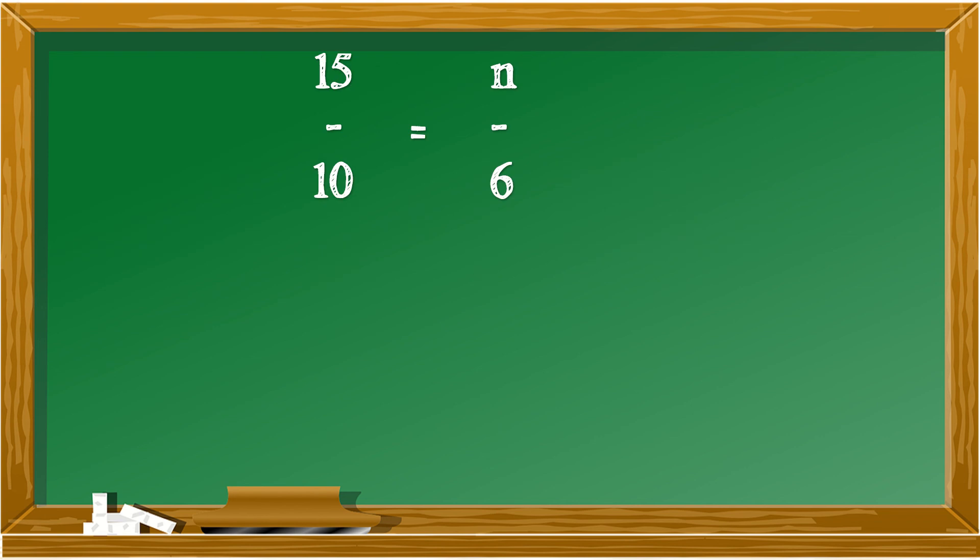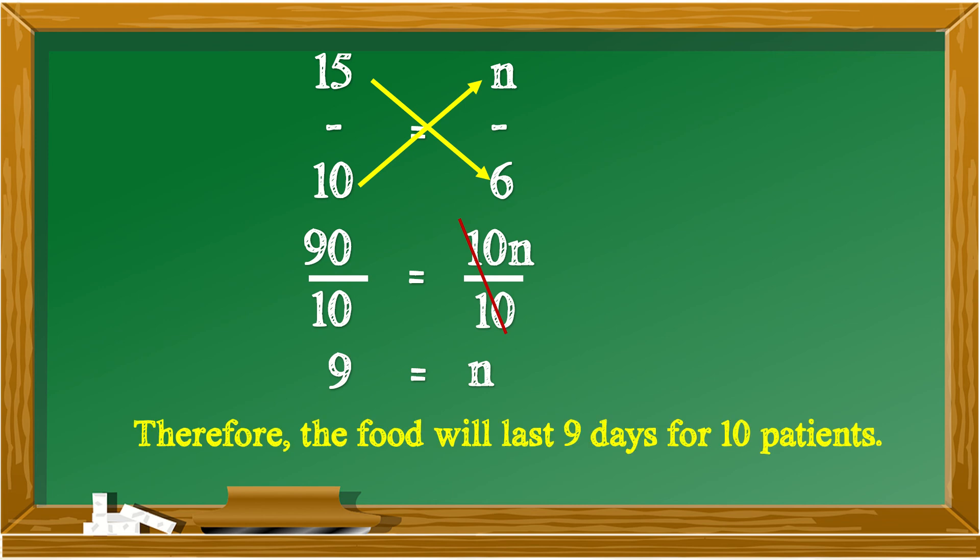Let us solve this proportion by doing cross multiplication. 15 times 6 is equal to 90. 10 times N is equal to 10N. Divide them both by 10, then cancel out those two 10 that will leave letter N alone. 90 divided by 10 is 9. So, meaning 9 is equal to N. Therefore, the food will last 9 days for 10 patients.